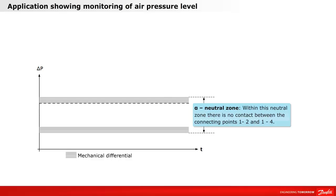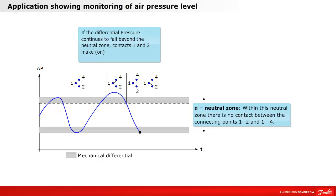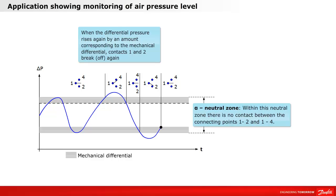Let's take a look at the contact function for a pressure switch and a differential pressure switch with a neutral zone. Within the neutral zone, there is no contact between connecting points 1 and 2, and 1 and 4. If the differential pressure rises above the neutral zone, contacts 1 and 4 make. If the differential pressure falls by the mechanical differential, which is fixed in the unit, contacts 1 and 4 break. If the differential pressure continues to fall beyond the neutral zone, contacts 1 and 2 make. When the differential pressure rises again by an amount corresponding to the mechanical differential, contacts 1 and 2 break again.